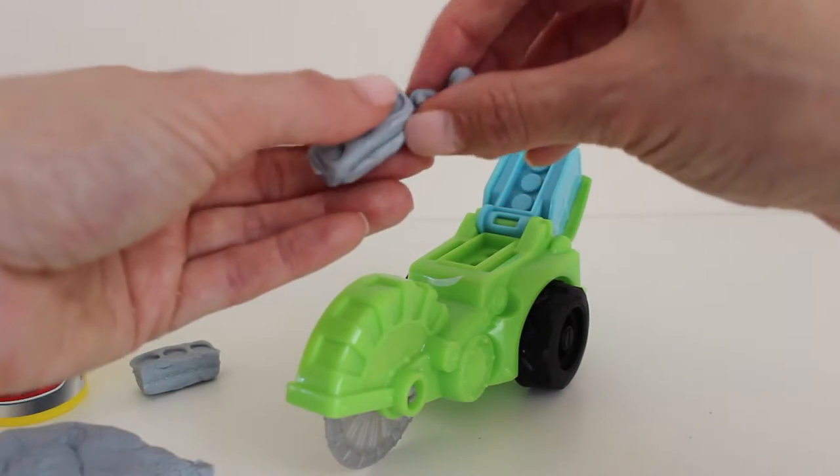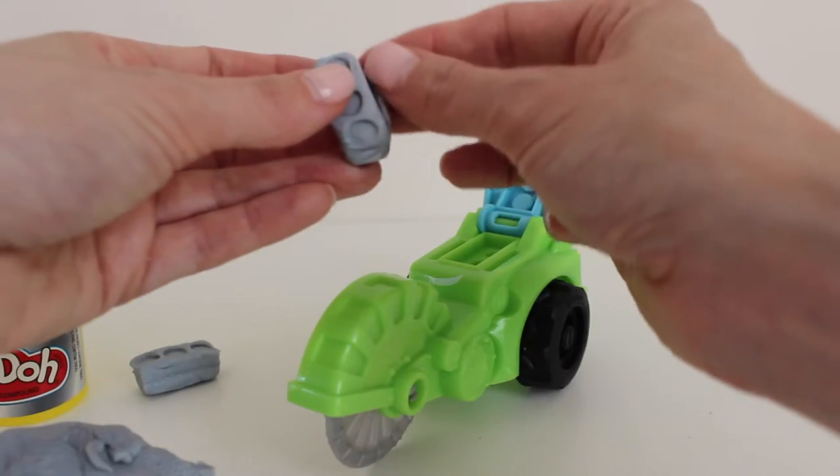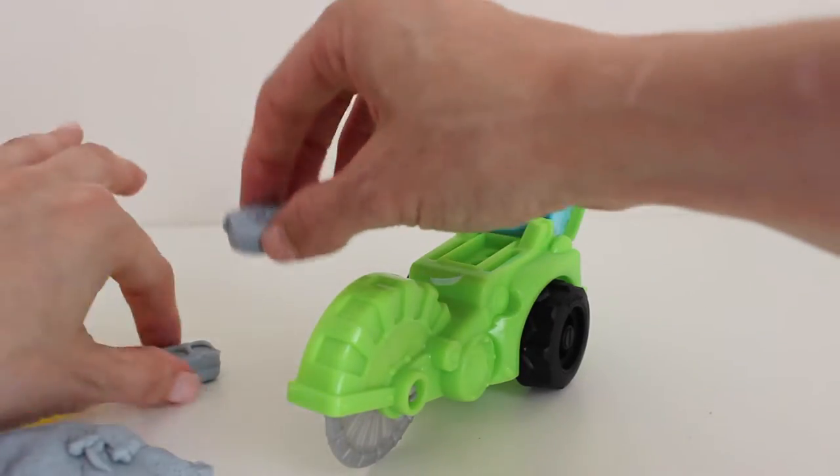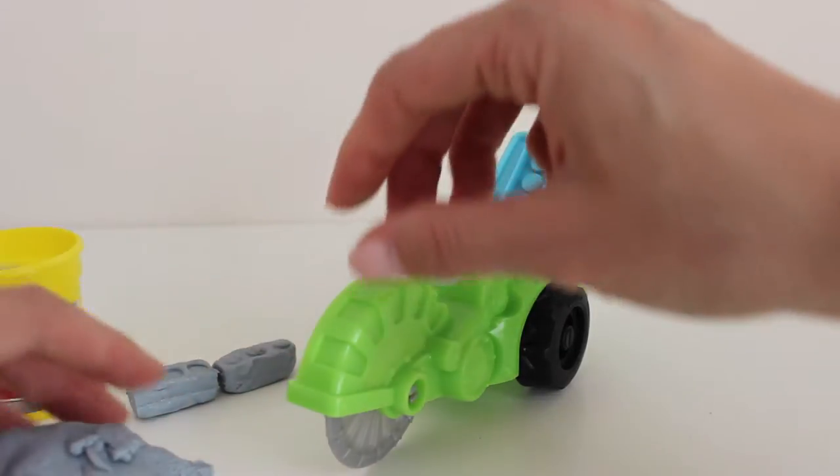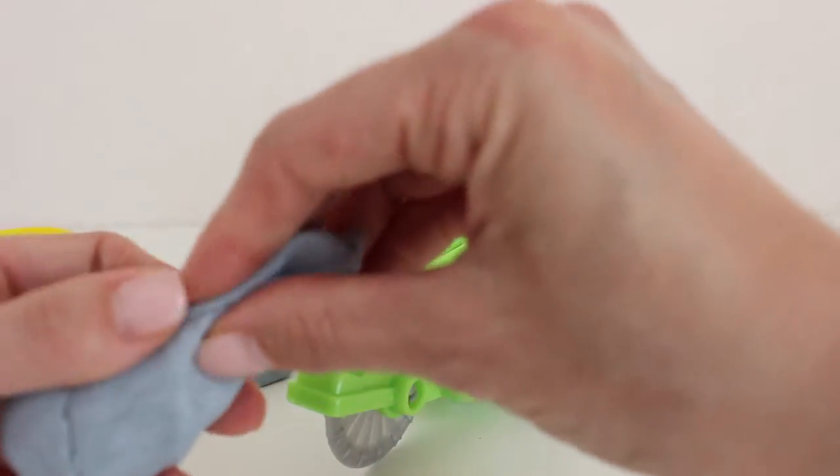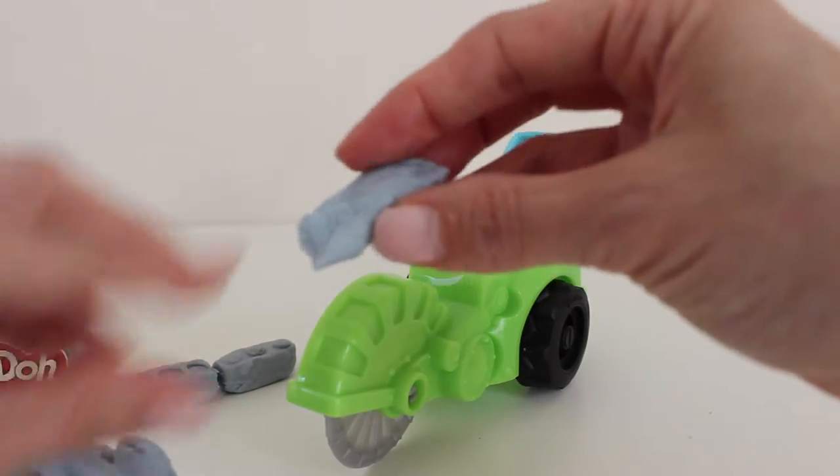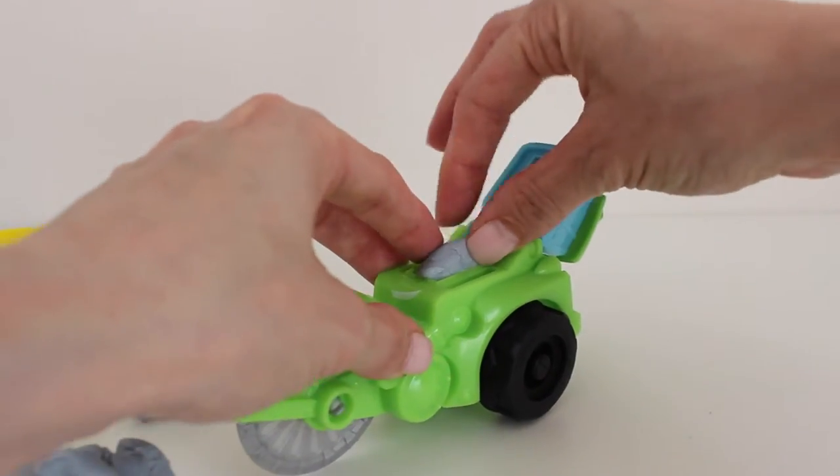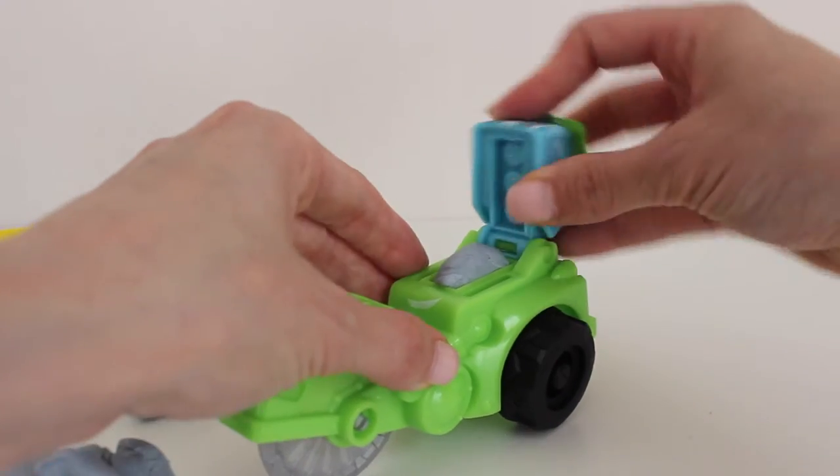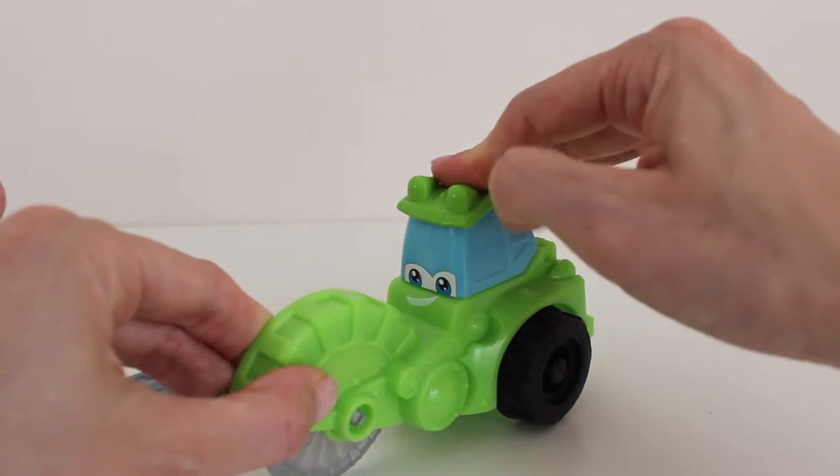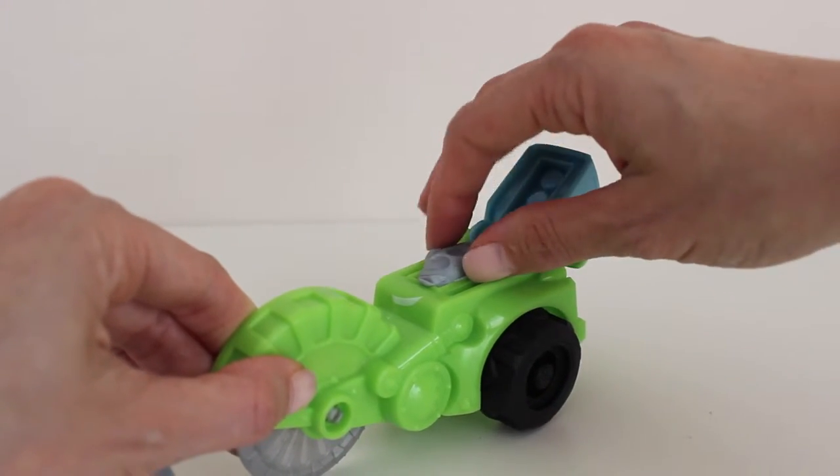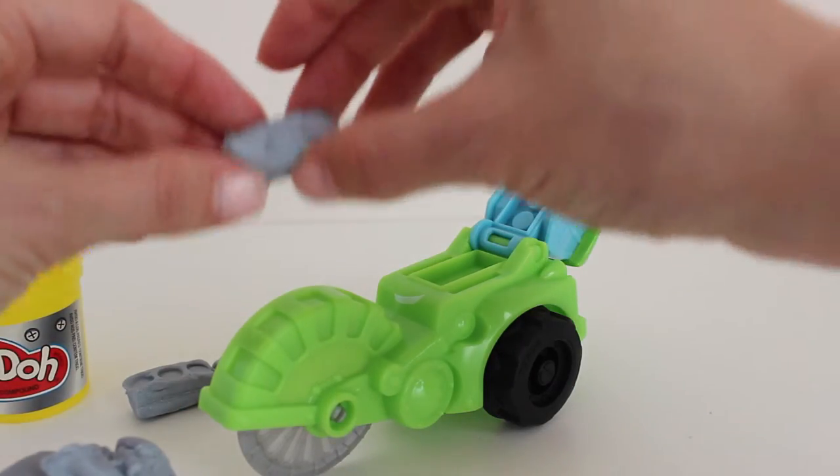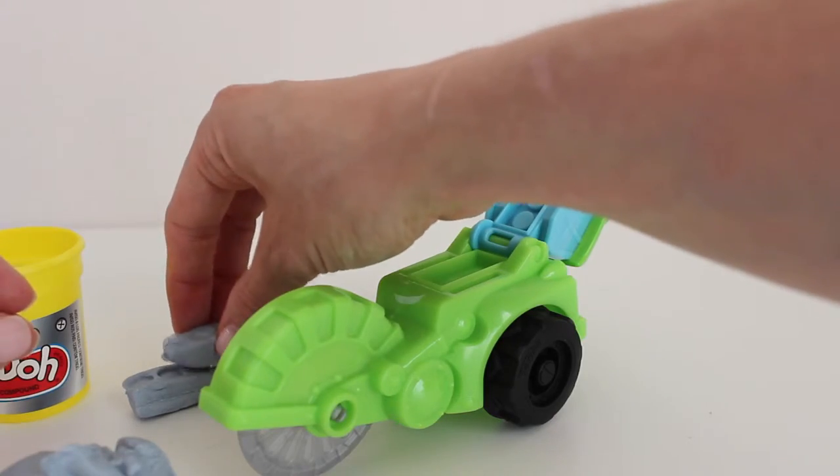Again we'll peel the sides off just so that this is a really neat looking block and all the sides are really flat. We can put that right next to our other one. And we can start actually stacking them.